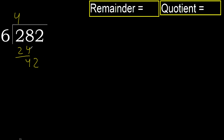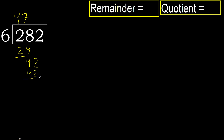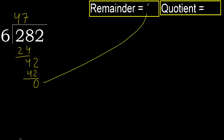Bring down the next digit: 42. 6 multiplied by 8 is greater, so multiply by 7: 42 is not greater. Subtract: 42 minus 42 is 0. There is no remainder, therefore we finish.